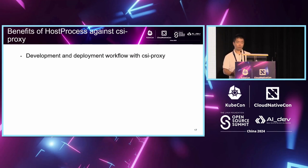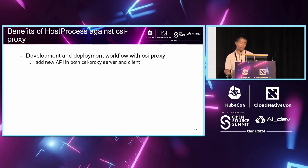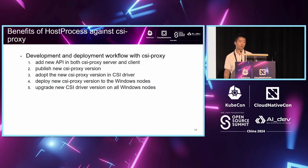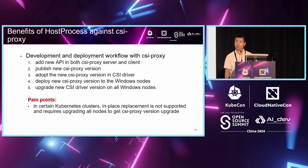Before the migration, if you want to do development and deployment, the workflow with the CSI proxy is a little complicated — you have five steps. Step one: add a new feature into the CSI driver, for example adding a new RPC in both CSI proxy server and client. Step two: publish the new CSI proxy version in the upstream repo. Step three: adopt the CSI proxy version in the CSI driver. Step four: deploy the new CSI proxy version onto all Windows nodes. And lastly, upgrade the CSI driver version on all Windows nodes.